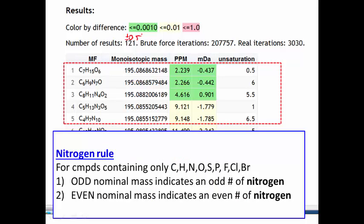We can do one more thing to eliminate, and that's something called the nitrogen rule. So you may be familiar with this rule. The nitrogen rule is essentially for organic compounds that contain these elements here. And what it states is that if the nominal mass is odd, then this indicates that our formula would contain an odd number of nitrogens. An even nominal mass would indicate an even number of nitrogen.